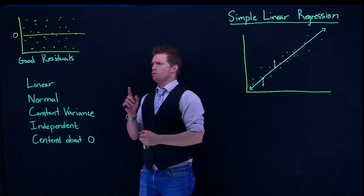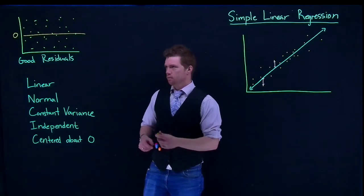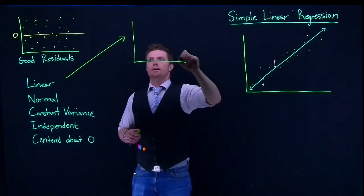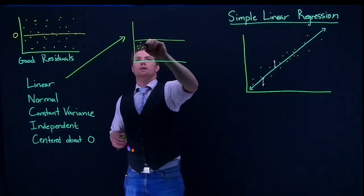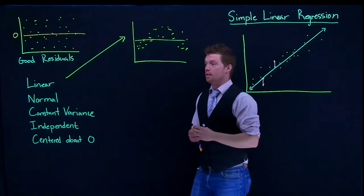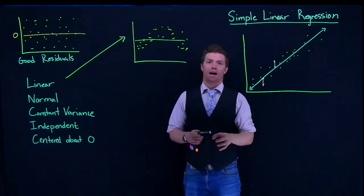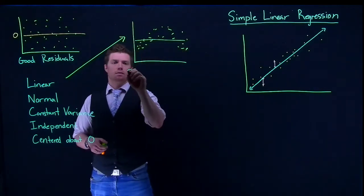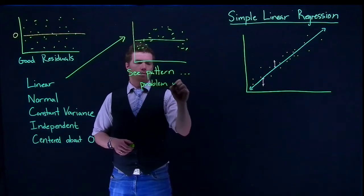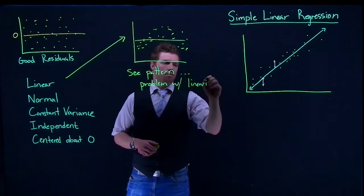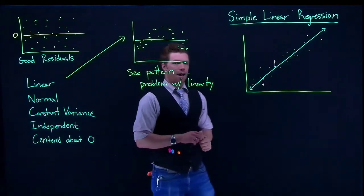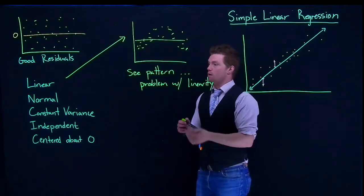First, let's look at a problem with linearity. When we have a problem with linearity, what we get in our residual plot is something that kind of looks like a parabola — any sort of pattern in our residuals. If we see a pattern, we have a problem with linearity. It could look like a sinusoid or some other pattern, but if we see a pattern, that's our first issue.